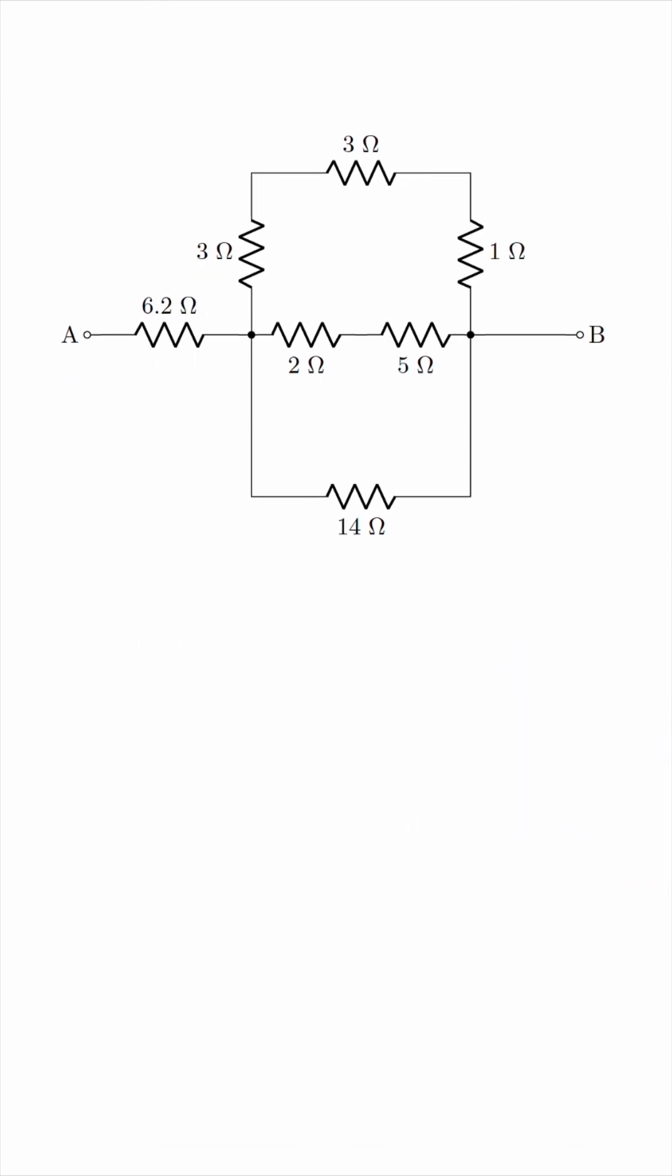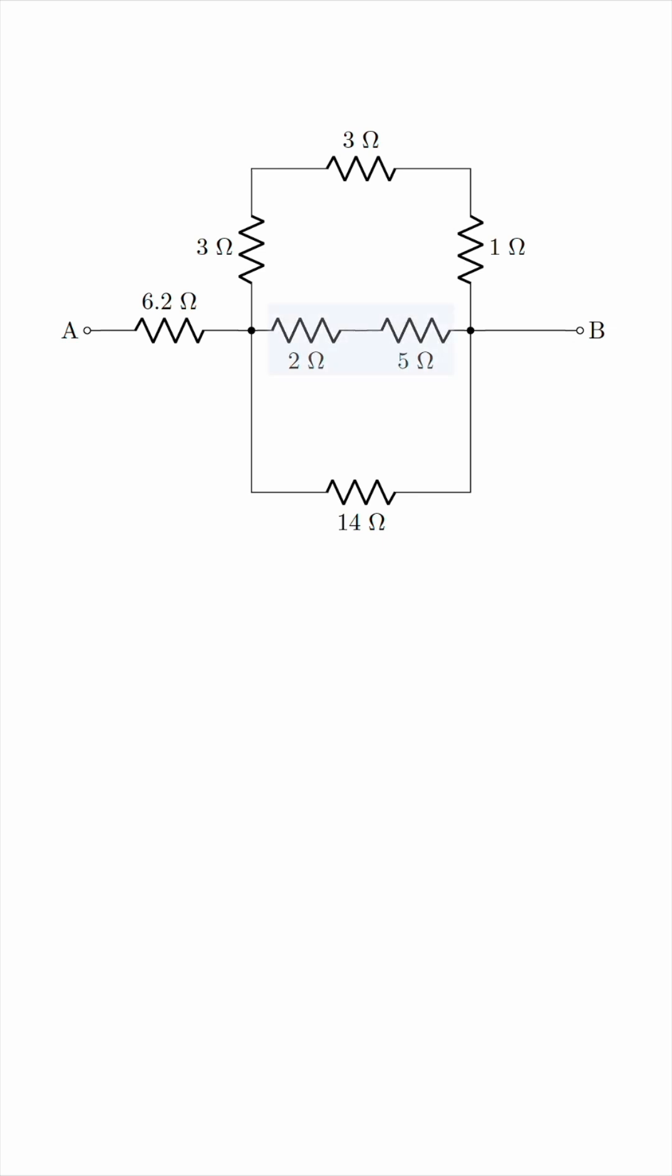The first thing to notice is that these two resistors are in series, and not only those two, but also these three resistors on the top are in series, so we can add each set of series resistors together. 3 plus 3 plus 1 is 7, and 2 plus 5 is also 7, so we can redraw the circuit as follows.